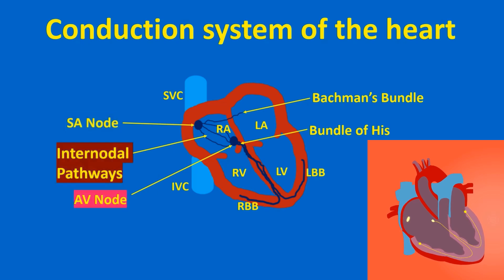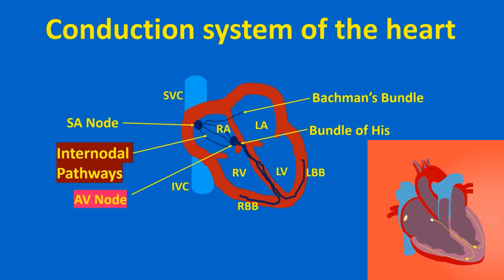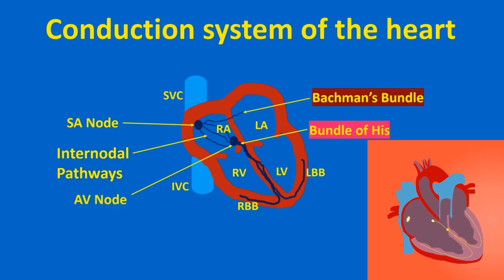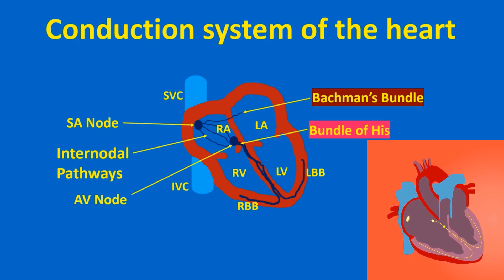Conduction from the SA node to the next relay station, known as the atrioventricular node in the lower part of the right atrium, is through internodal pathways which are specialized conduction tissue in the right atrium. One of the internodal pathways has a branch to the left atrium through which conduction occurs simultaneously to the left atrium — i.e., Bachmann's bundle.